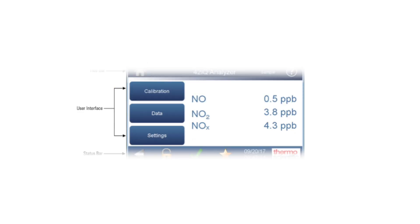The middle, or user interface, includes calibration buttons where you can calibrate the instrument, set up auto calibrations, and view calibration data. The data button shows real-time data and graphs. And the settings button shows real-time status and alarms, along with other diagnostic tools.